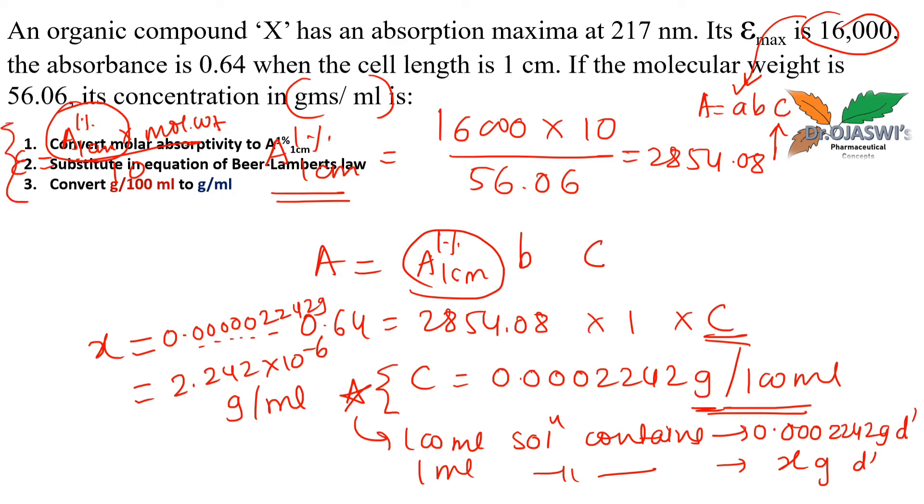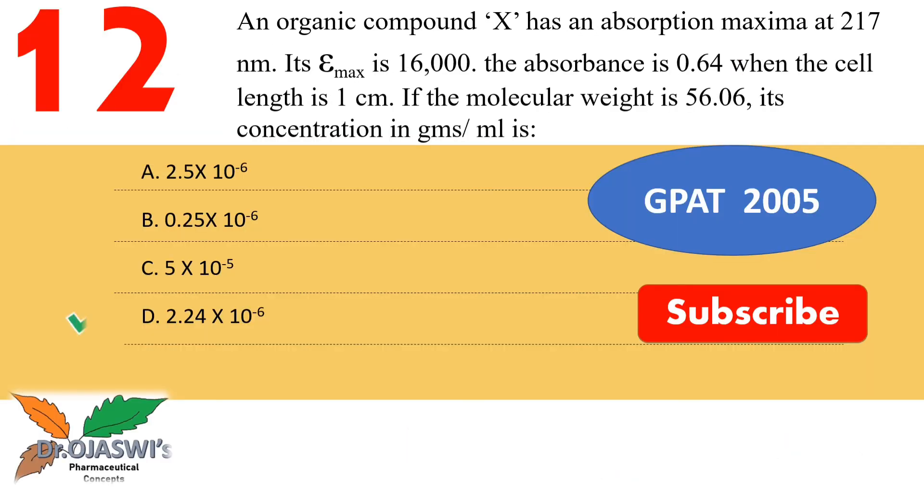Checking the options: yes, it's given in option D, 2.242 times 10 to the minus 6 grams per ml.